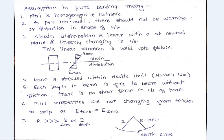Now let us discuss assumptions in pure bending theory. The first assumption is, as I explained earlier in assumptions in strength of material, material is homogeneous and isotropic. Homogeneous means at any point material property is same in one direction. And isotropic means at one point property is same in all direction.